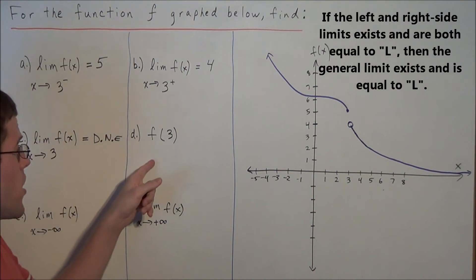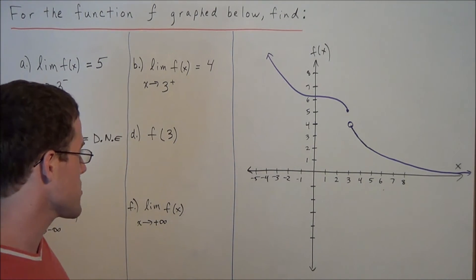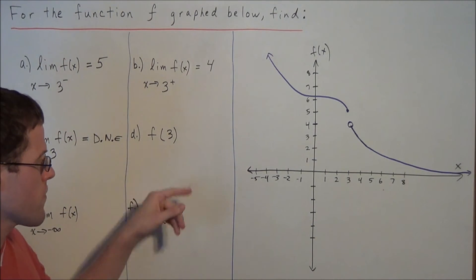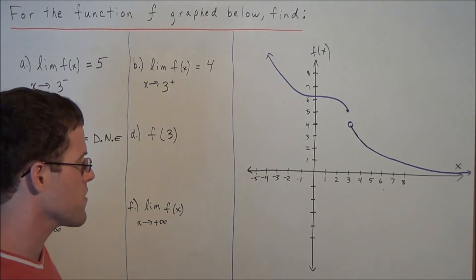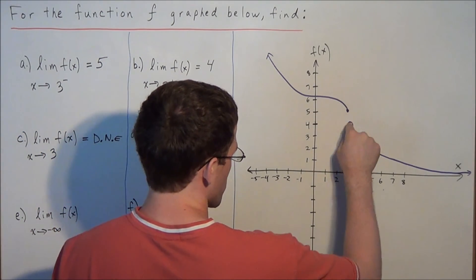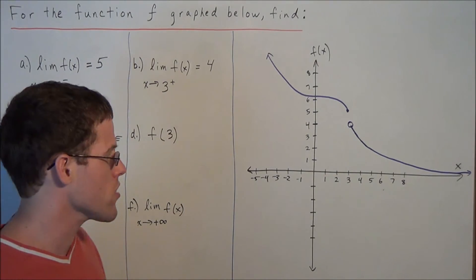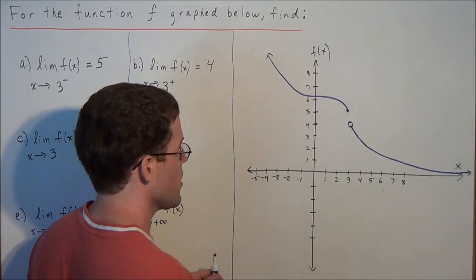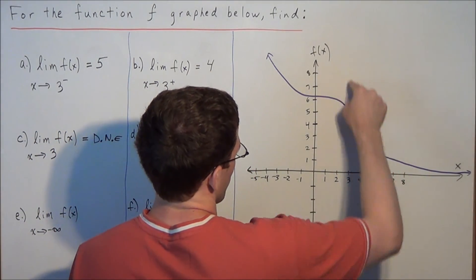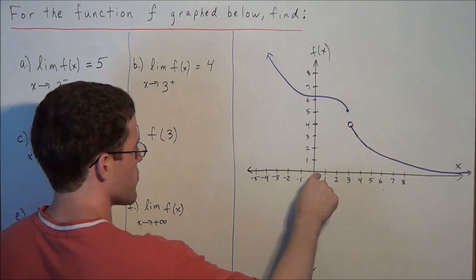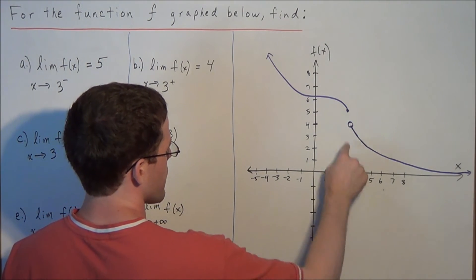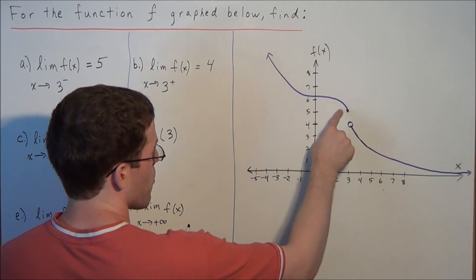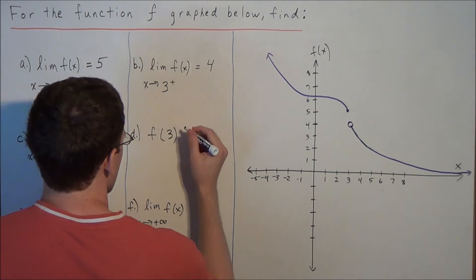Now we're asked to find f of 3. This has merit when we springboard to continuity, but all they're asking for is the function value at 3. We need to be careful not to confuse the point (3, 4) — the point (3, 4) is not part of our function because we have an open circle at that point. This means do not include that point, otherwise it wouldn't be a well-defined function and would fail the vertical line test. The function value at 3 is equal to 5 — the point (3, 5) is on our function with a solid dot, so f of 3 is equal to 5.